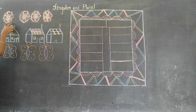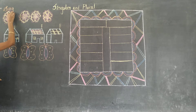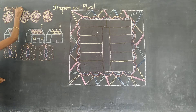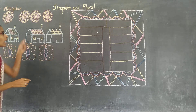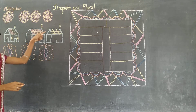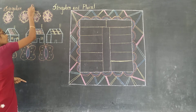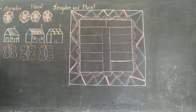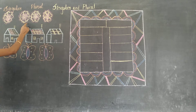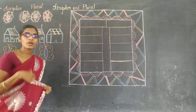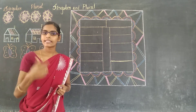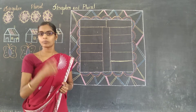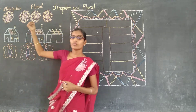Only one of something is said to be singular. And more than one of the same thing is plural. Flower — flowers. The pronunciation and spellings get different from singular to plural. Here, flower, and here, flowers.